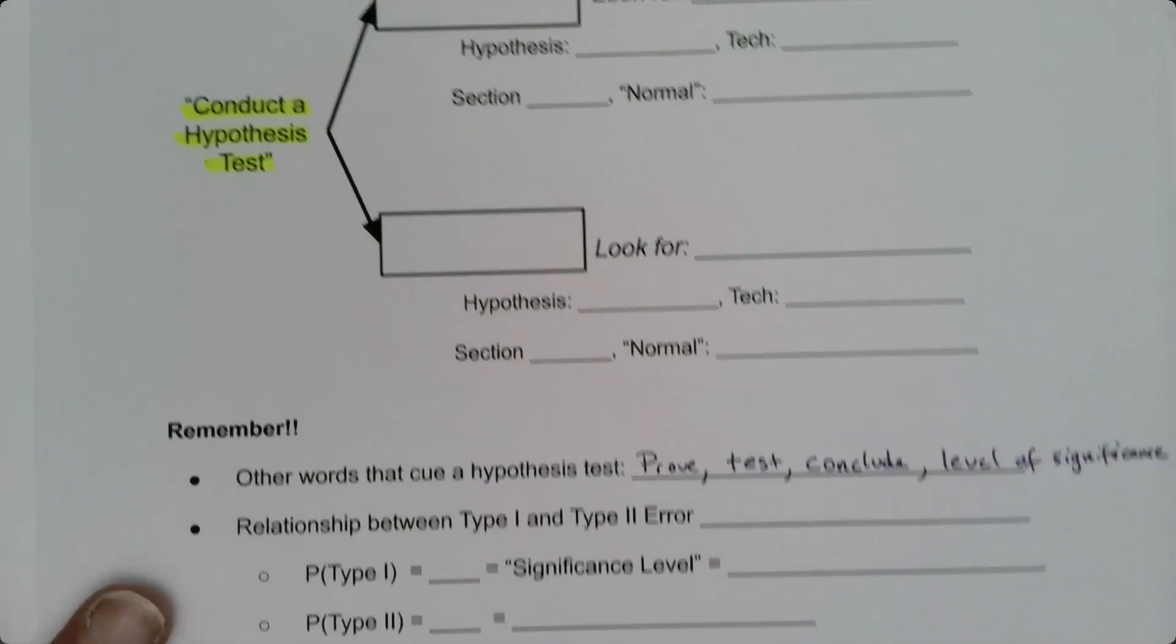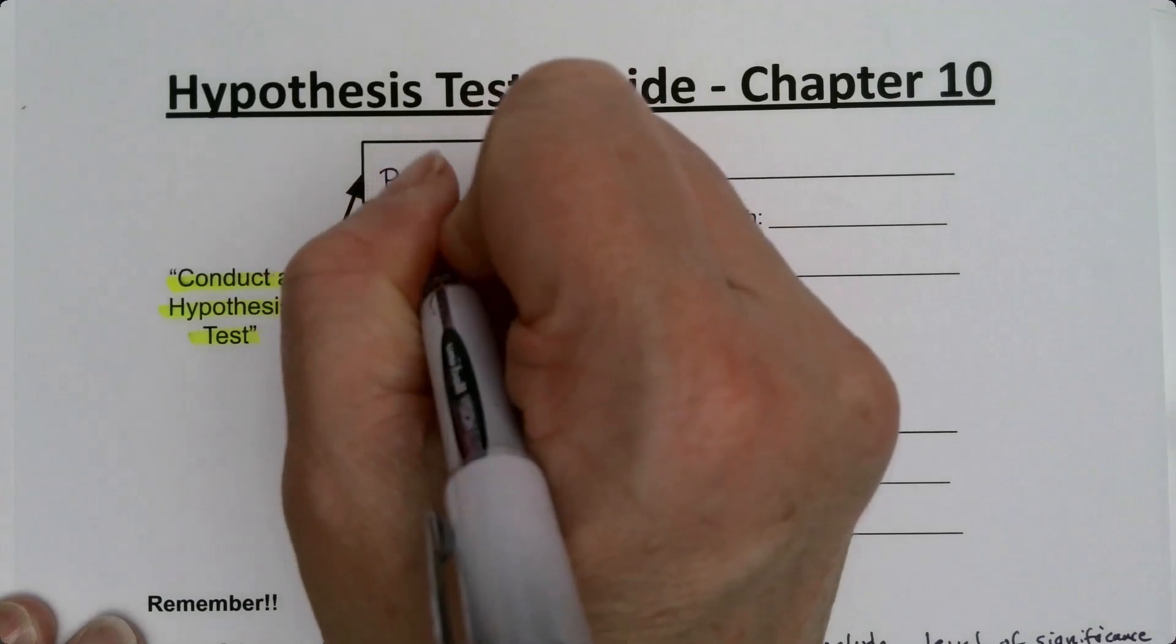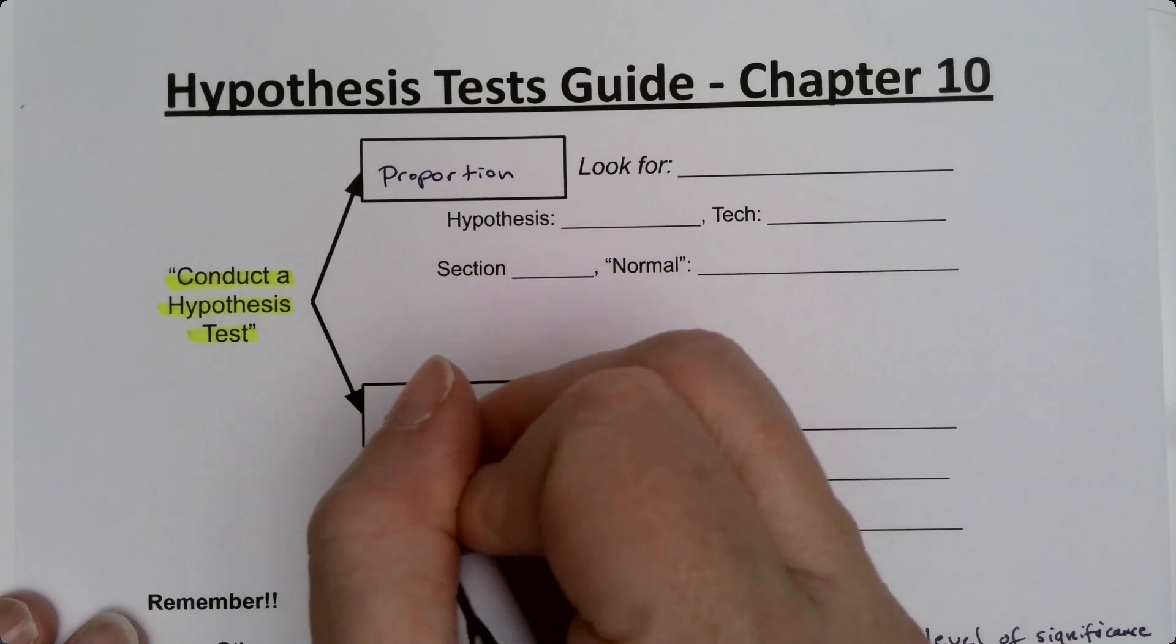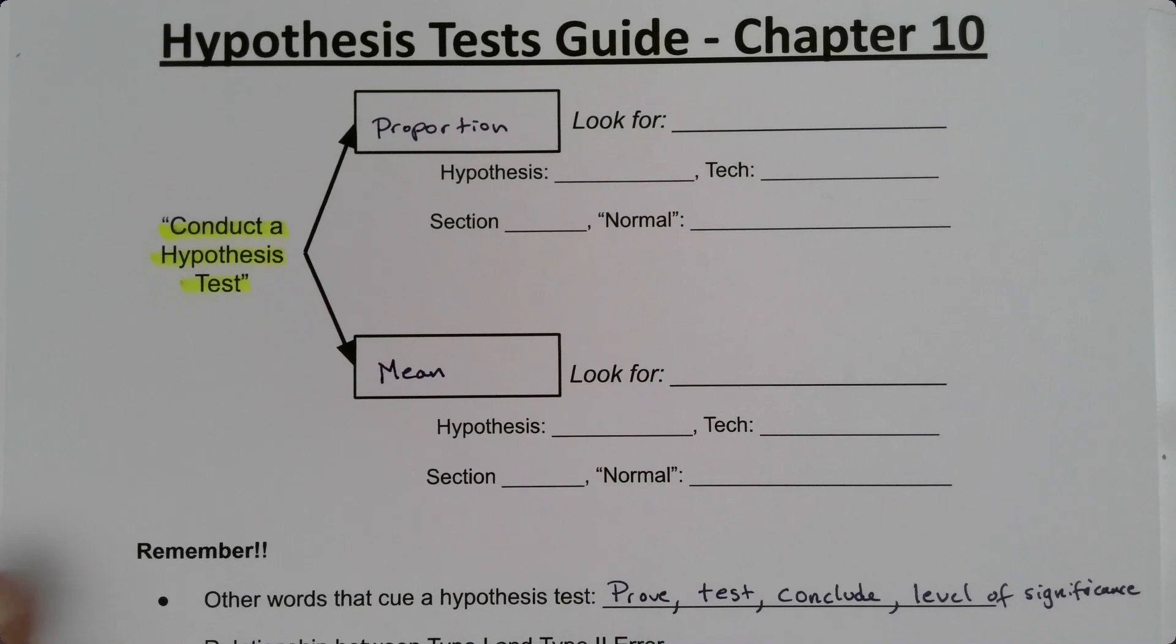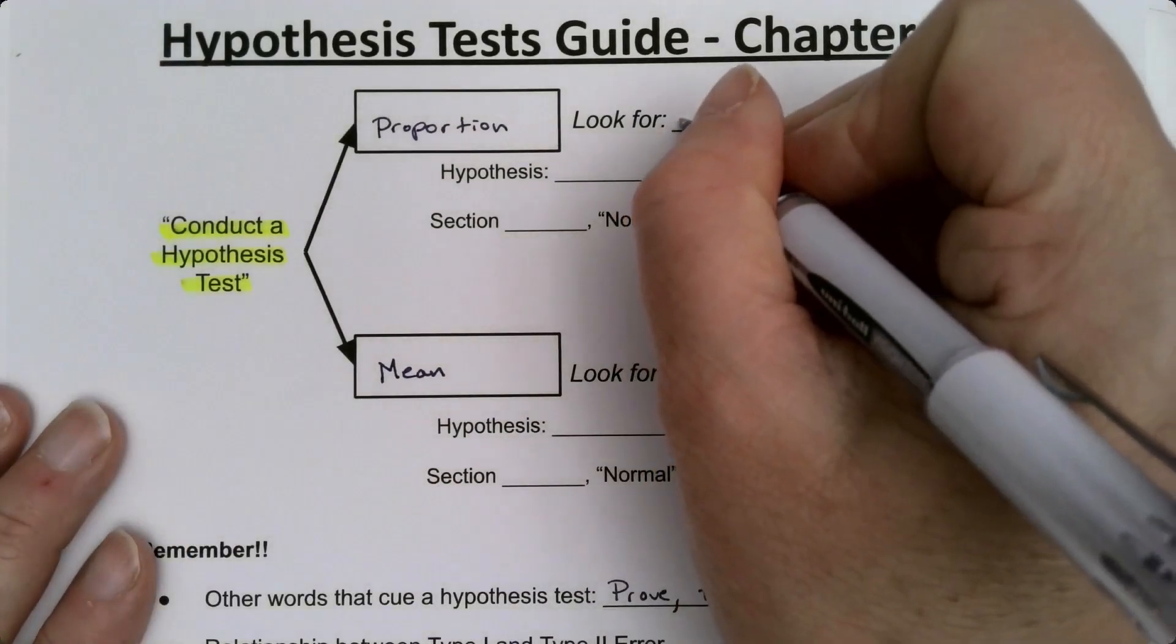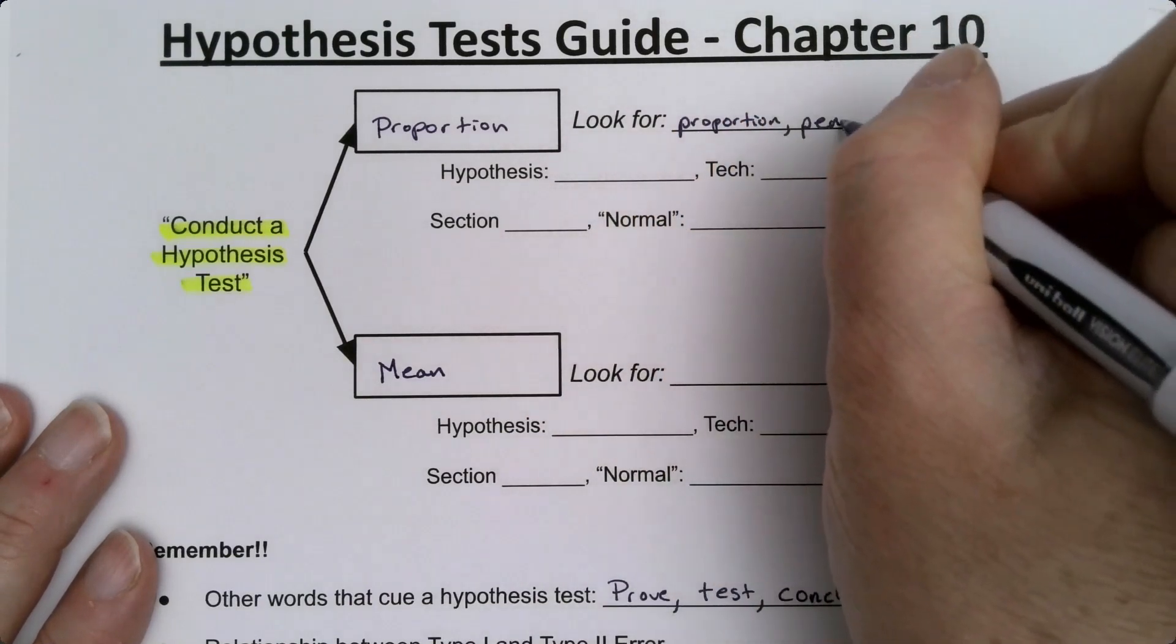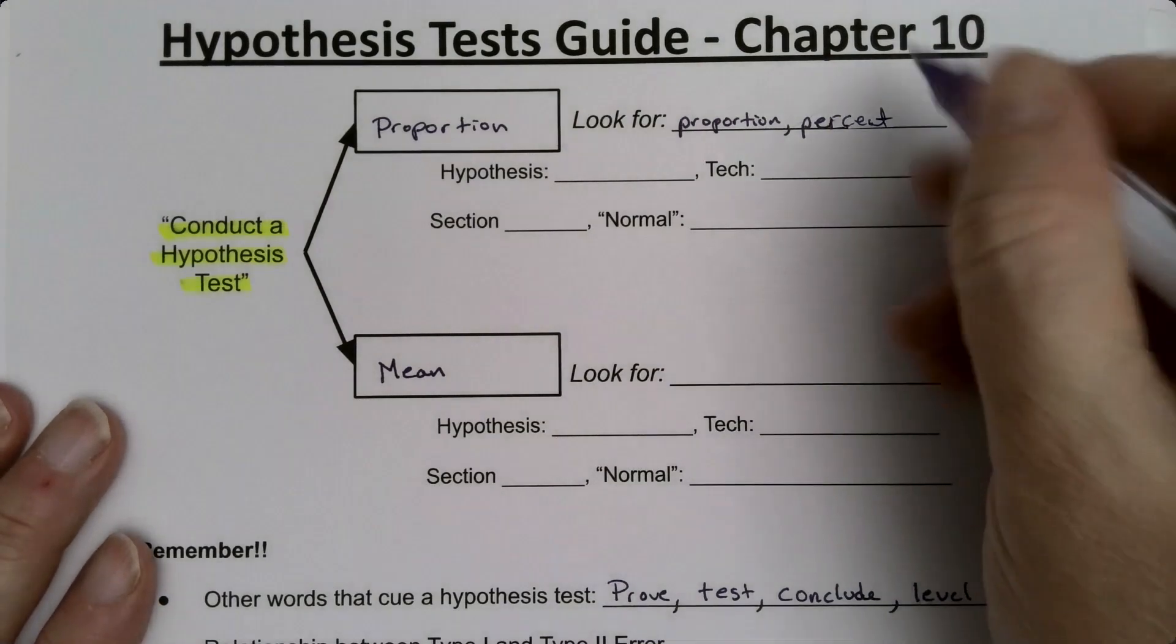What are the two types of tests we've learned? We've learned to test for proportion and to test for a mean. The test for proportion is a little harder to spot. How do you know it's a test for proportion? Obviously the word 'proportion' in the problem or percents flying around—not just the percent for the level of significance but other percents.